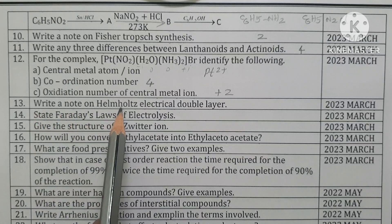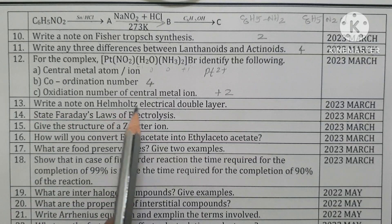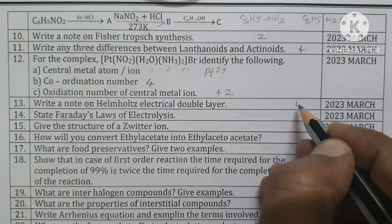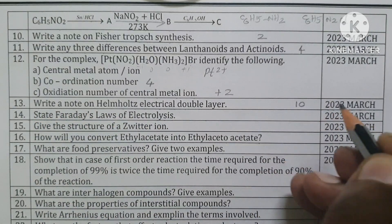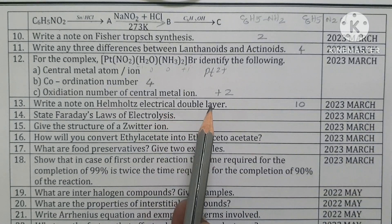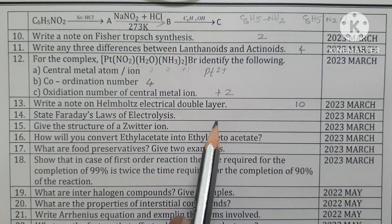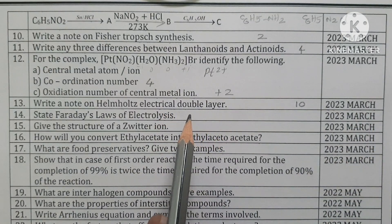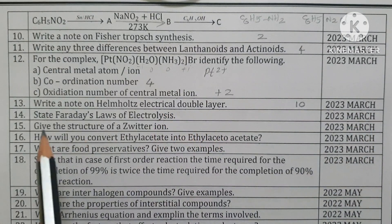Write a note on Helmholtz electrical double layer — lesson number 10. Helmholtz electrical double layer is used to understand the stability of a colloid.